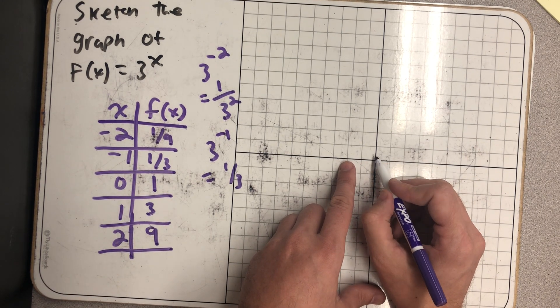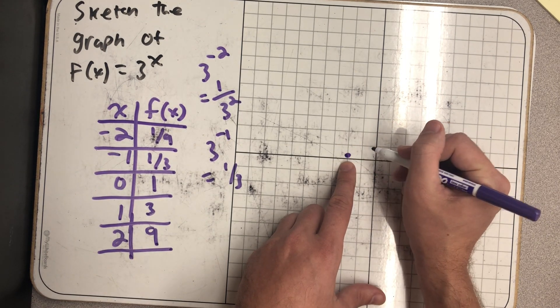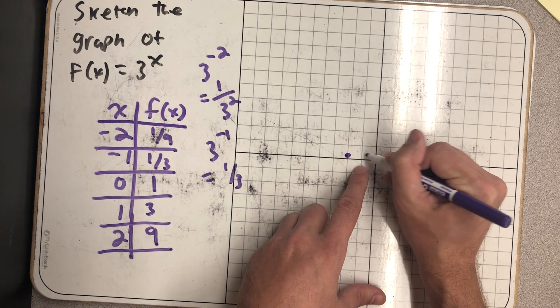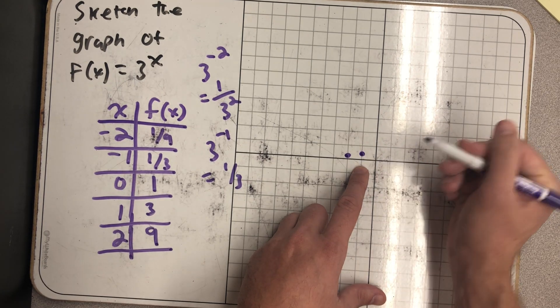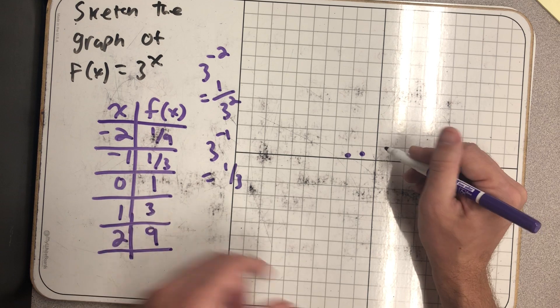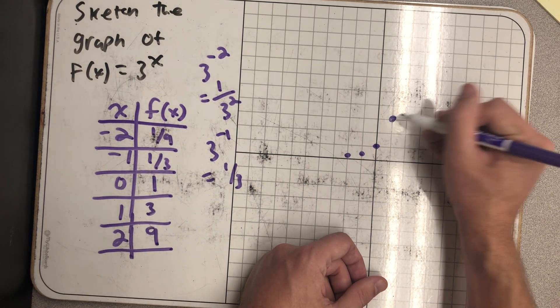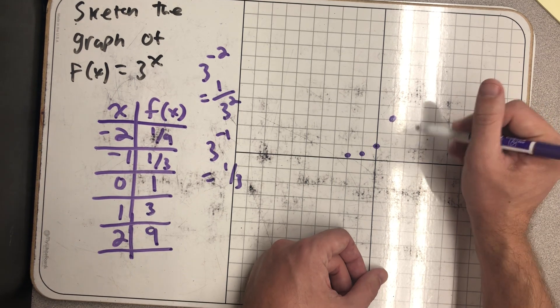At -2, I'm very low at positive 1/9. At -1, I'm at 1/3, just a little higher. That probably needs to be a little lower, but it's hard to sketch that in there. At 0, I'm at 1. At 1, I'm at 3. And at 2, I'm at 9.